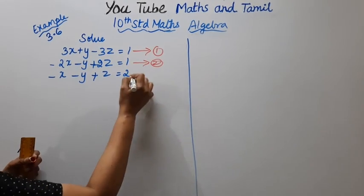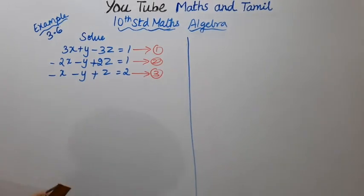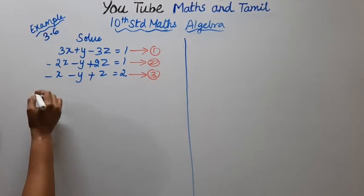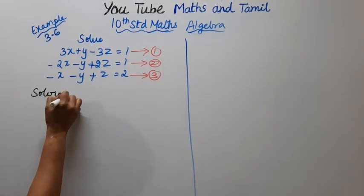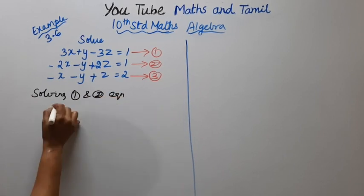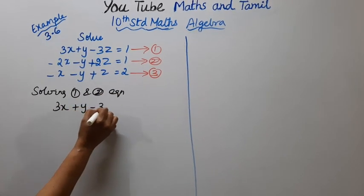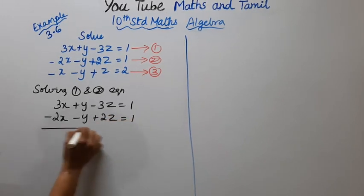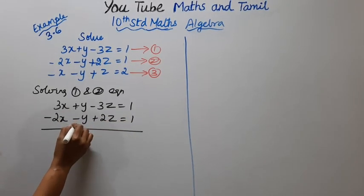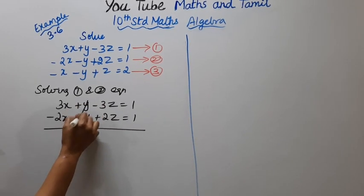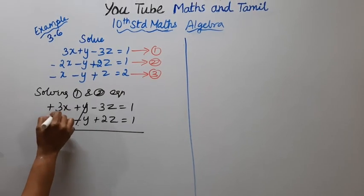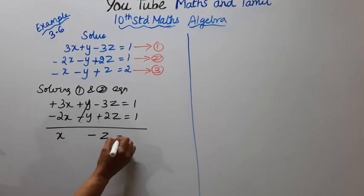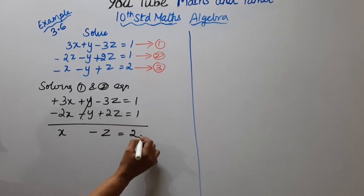Solving the first and second equations: 3x plus y minus 3z equal to 1, and minus 2x minus y plus 2z equal to 1. The y terms cancel: plus y minus y. Adding gives 3x minus 2x, which is x, and minus 3z plus 2z, which is minus z, equal to 1 plus 1, which is 2. This is the fourth equation.